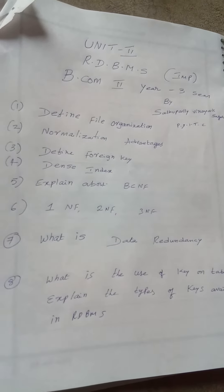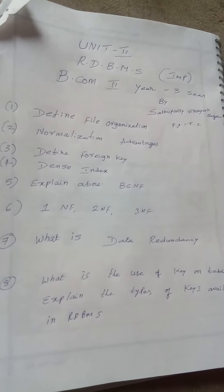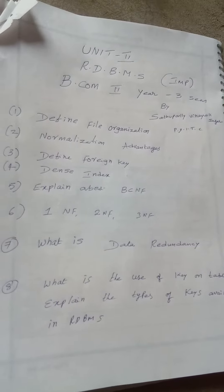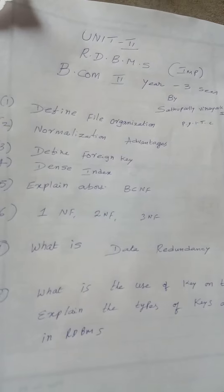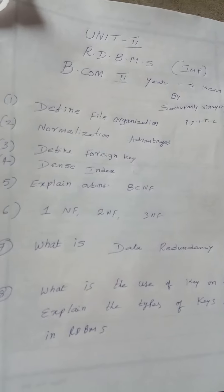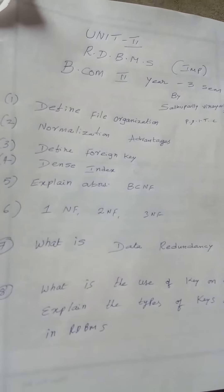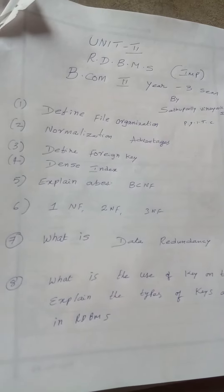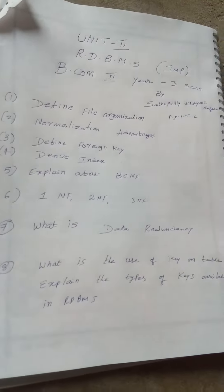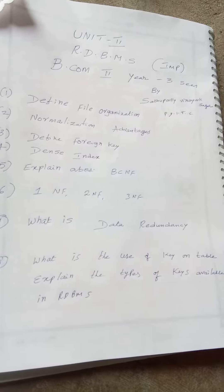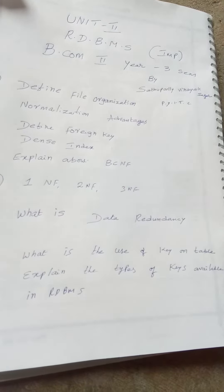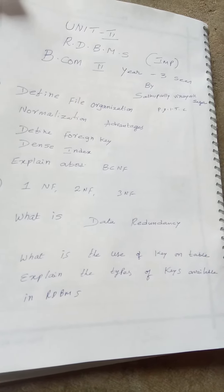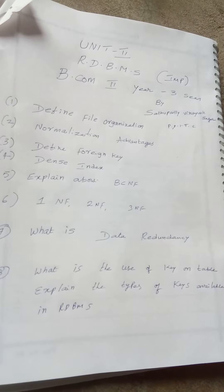The important questions include: define file organization, advantages of normalization, define foreign key, dense index, explain about BCNF, 1NF, 2NF, 3NF, what is data redundancy, what is the use of keys in a table, and explain the types of keys available in RDBMS.